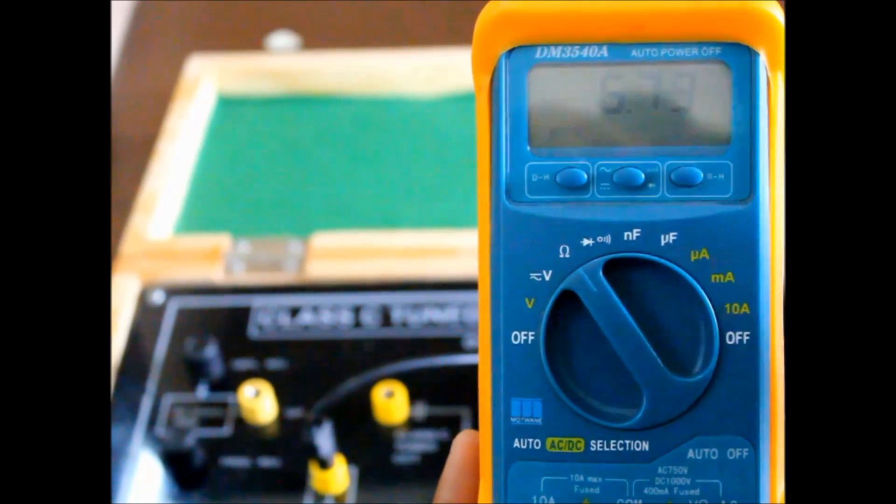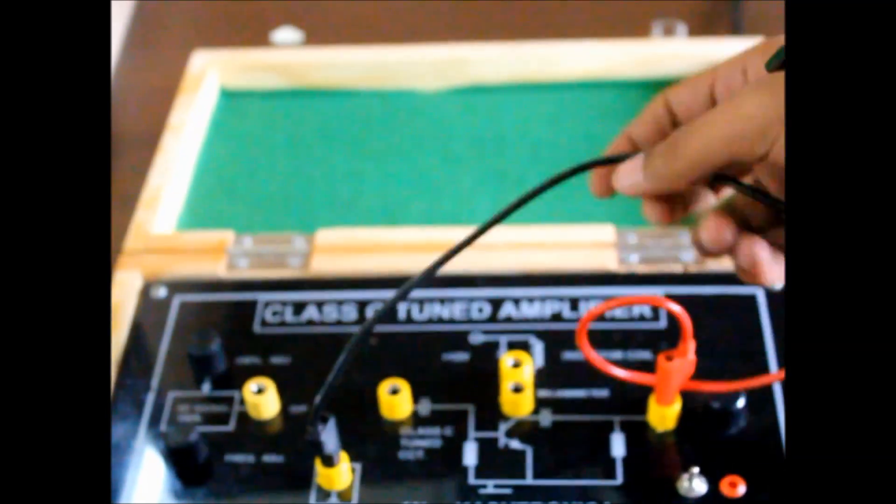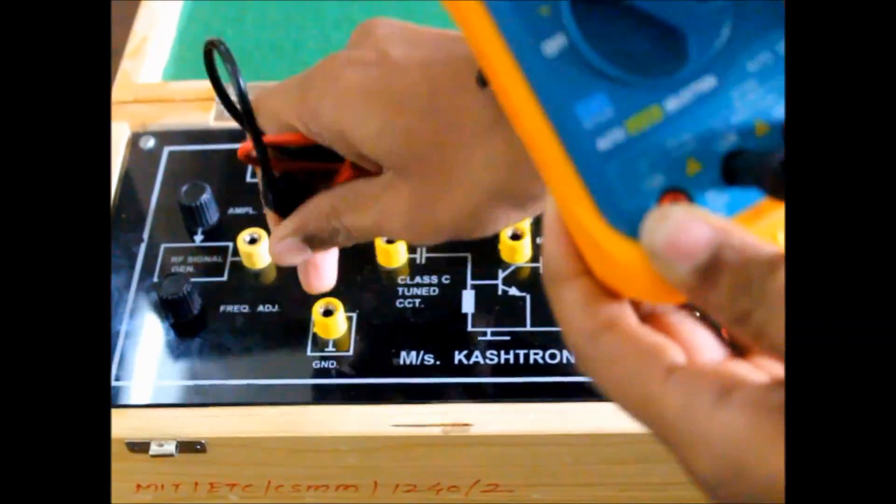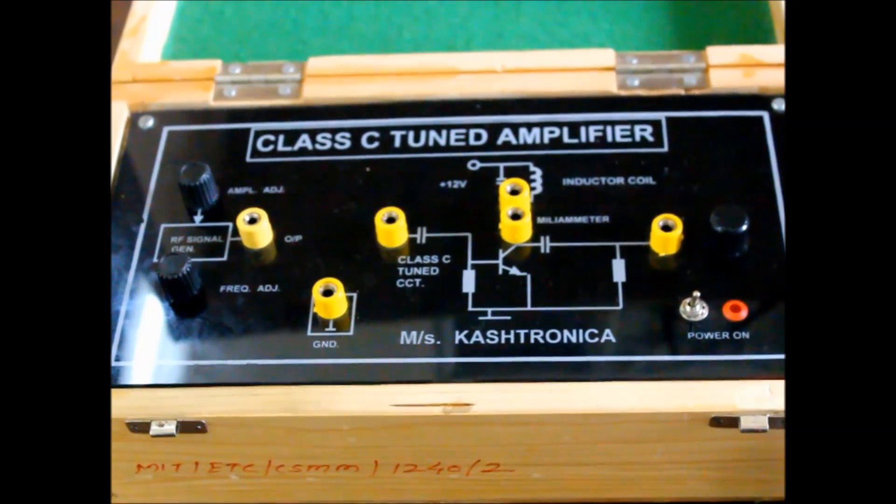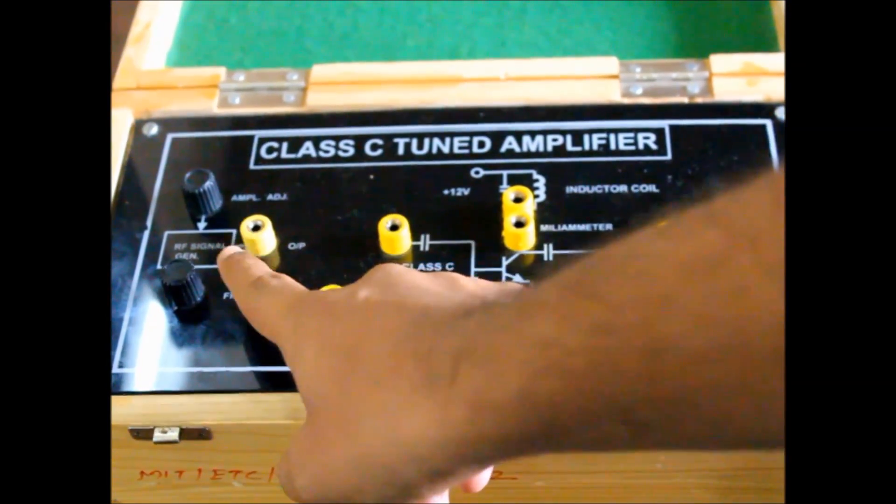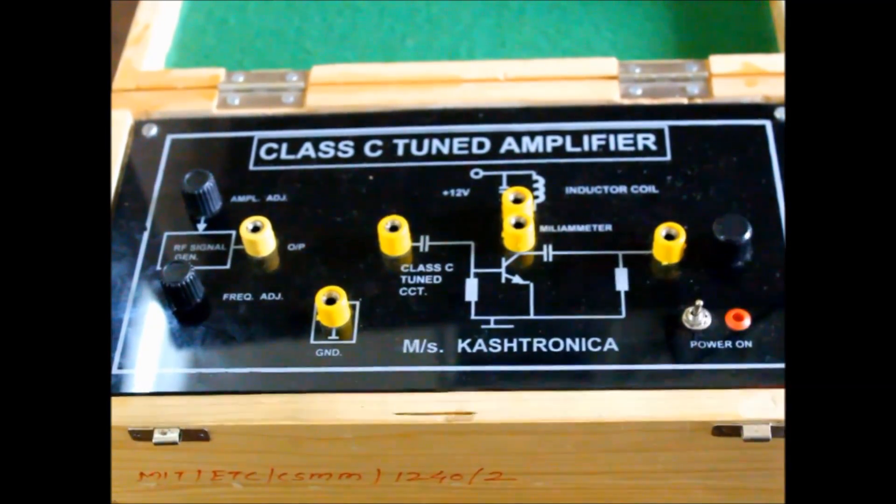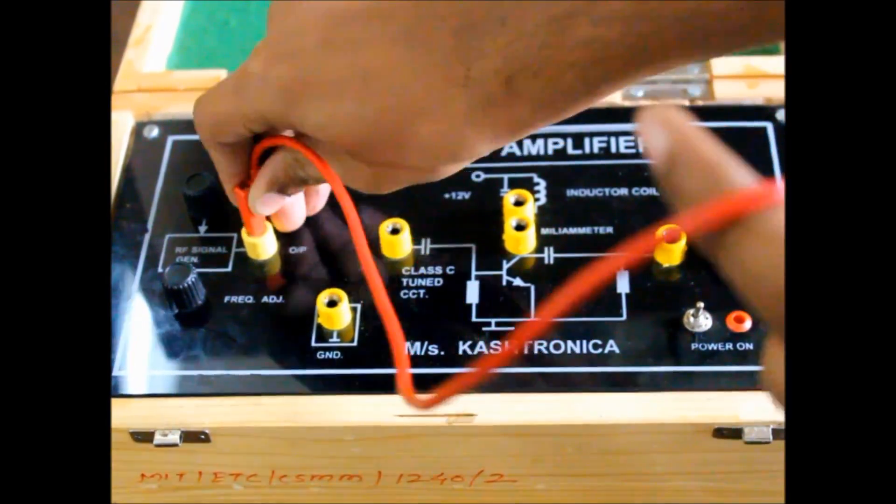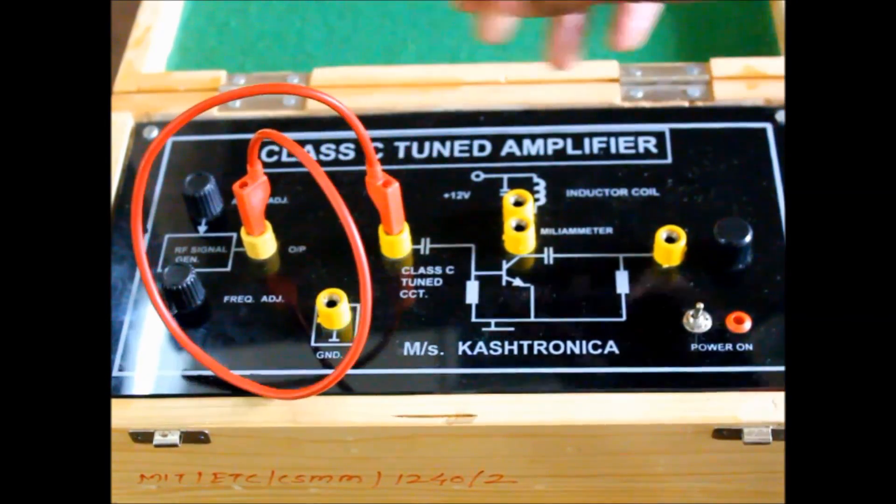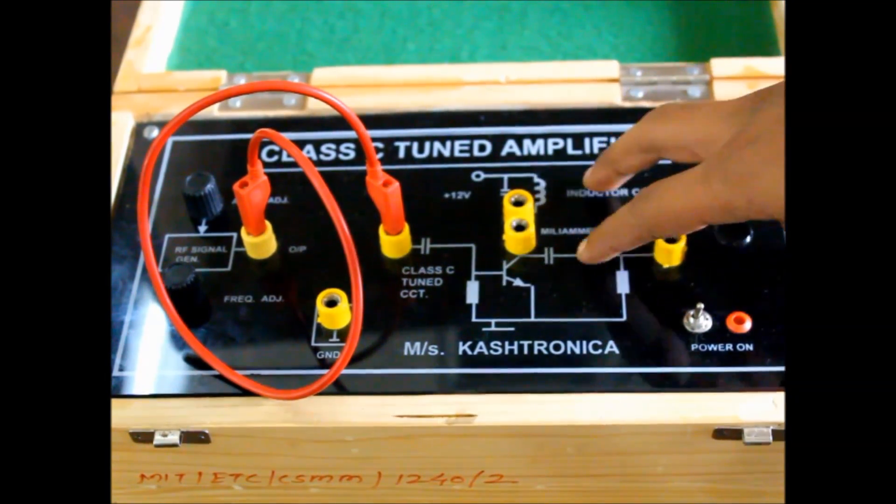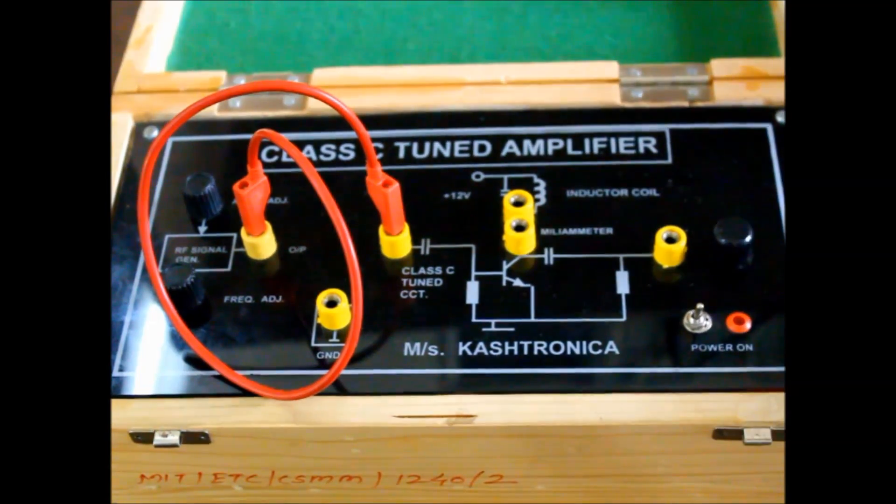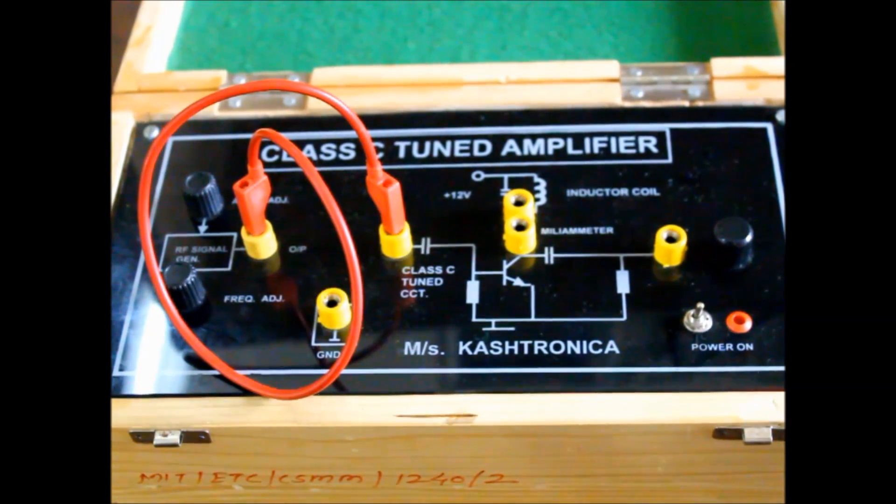So now approximately 6.8 kilo. Now we will connect the RF signal into the input of the amplifier. As I said, connections are very simple. We have to measure the current across inductor coil, so as we know, we have to connect milliammeter in series.